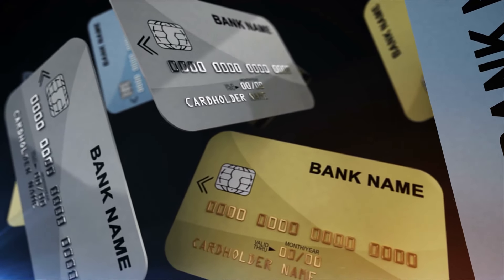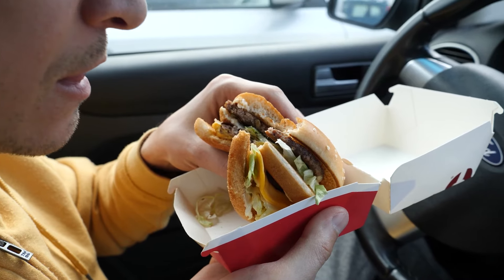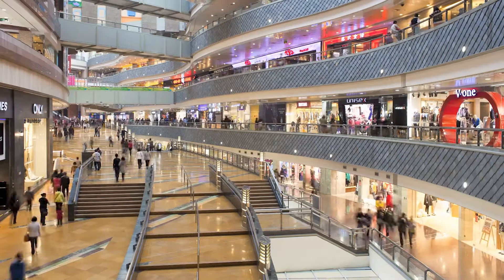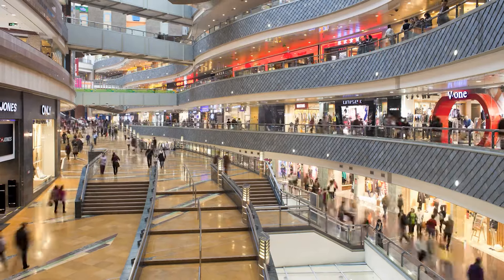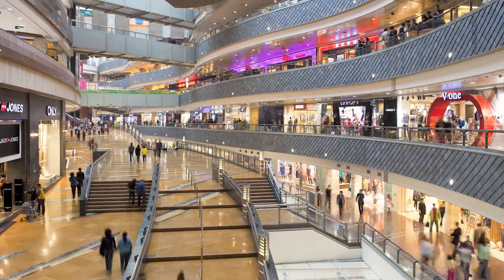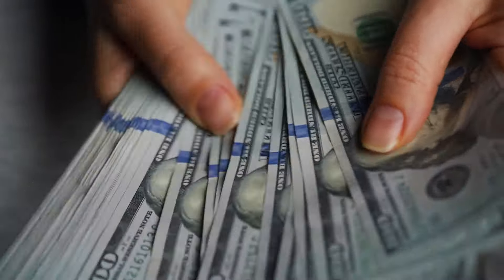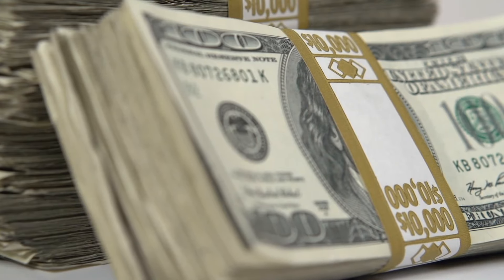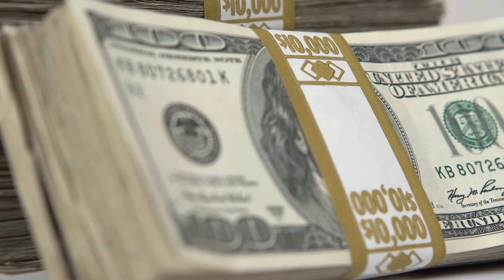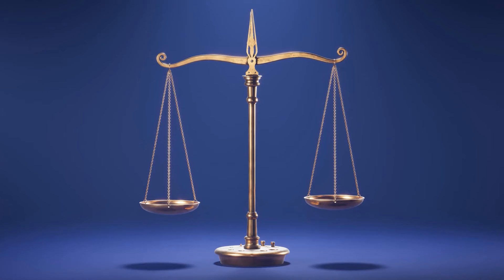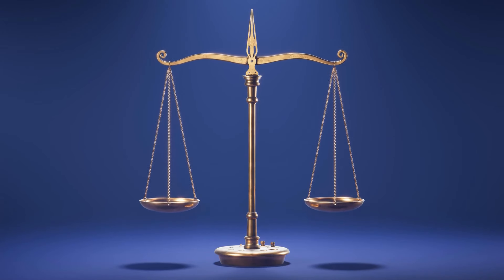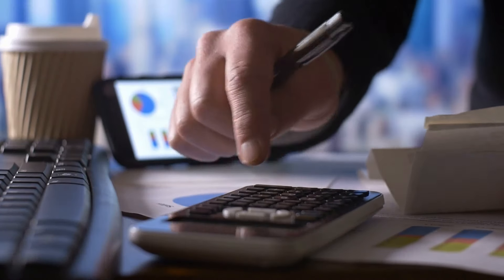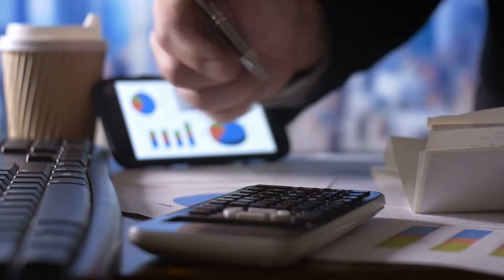Yet, credit card debt symbolizes a darker side. Similar to indulging in junk food, it offers instant gratification but leads to regret. Sally's shopping spree exemplifies this, where lavish spending results in mounting debt and relentless interest. Financial literacy involves grasping the delicate balance between assets and liabilities. Picture finances as a seesaw, assets as heroes and liabilities as villains. The aim is equilibrium, akin to dodging dodgeballs requiring agility and discernment. This understanding is essential for navigating the complex terrain of personal finance.